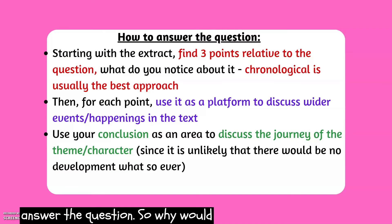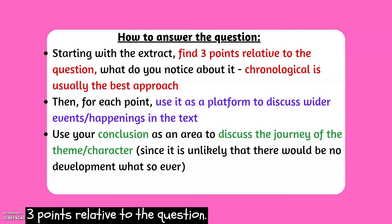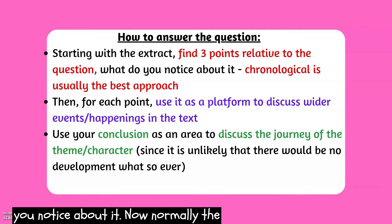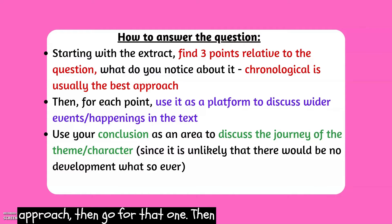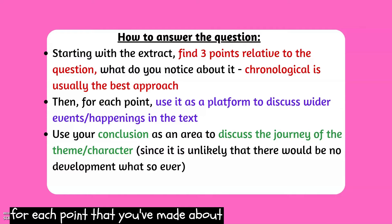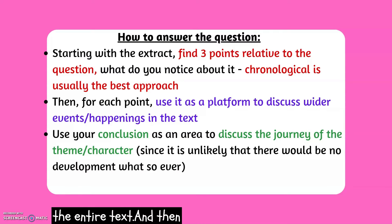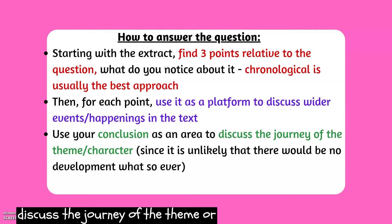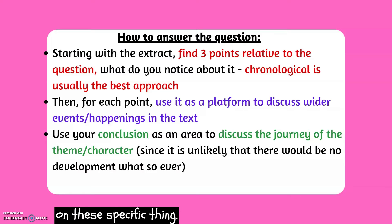Now moving on to how to answer the question. I would suggest starting with the extract — find three points relative to the question and find what you notice about it. Normally the points should be chronological, as this is usually the best approach, however if you have formulated your own approach then go for that. For each point you've made about the extract, use it as a platform to discuss wider events or happenings in the entire text. Then use your conclusion as an area to discuss the journey of the theme or character you're being asked about, because it's unlikely there would be no development whatsoever on the specific thing.